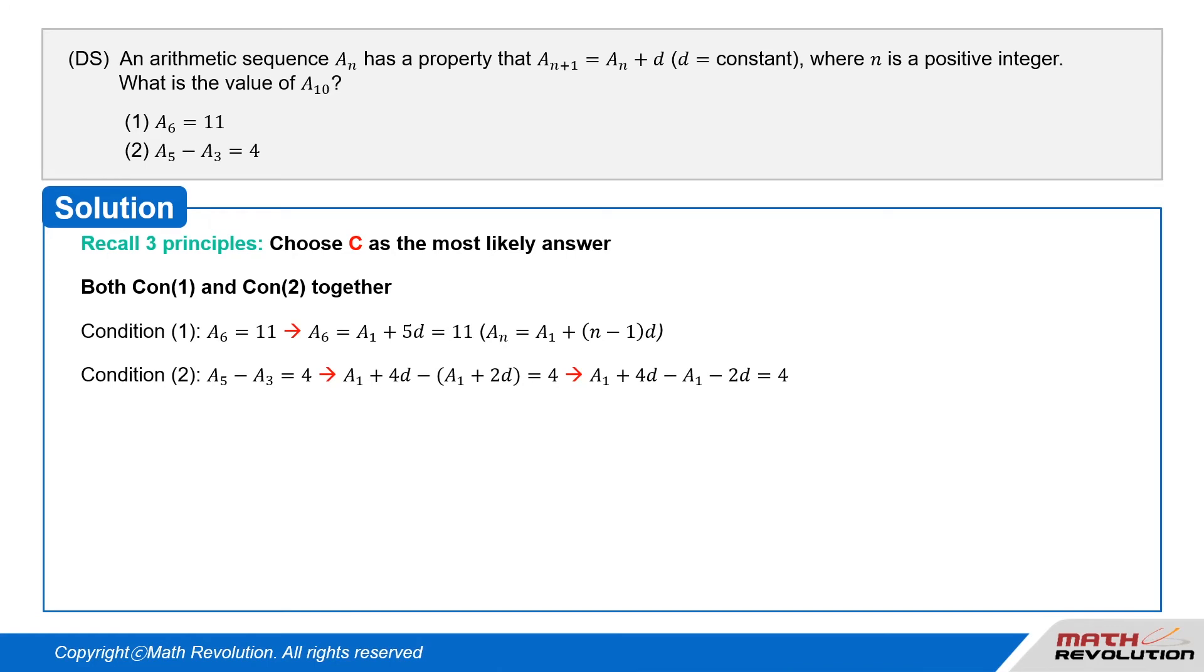Since a_n = a_1 + (n-1)d, condition 1 tells us that a_6 = 11, so a_6 = a_1 + 5d = 11. Condition 2 tells us that a_5 - a_3 = 4. Then (a_1 + 4d) - (a_1 + 2d) = 4.